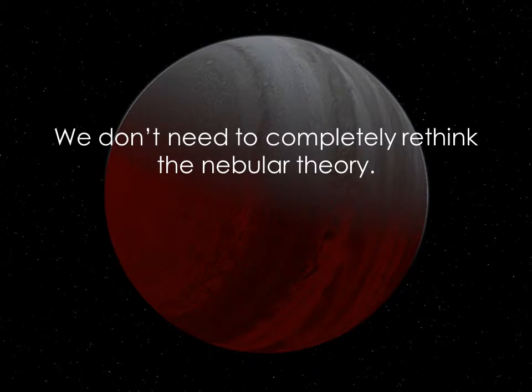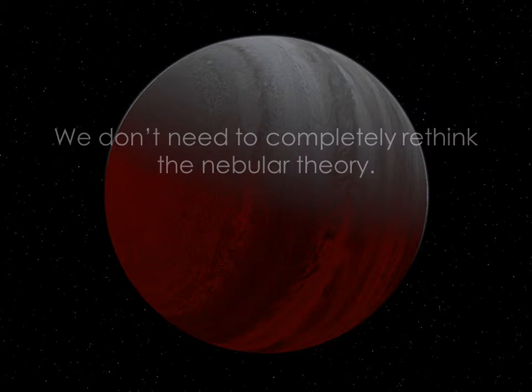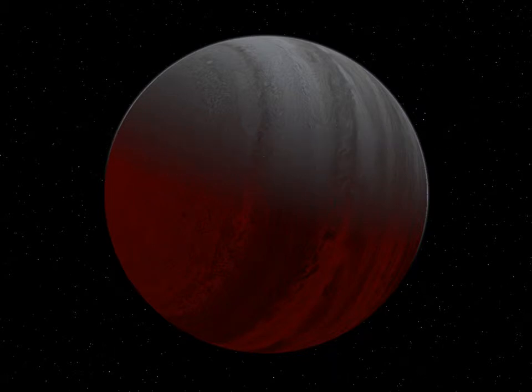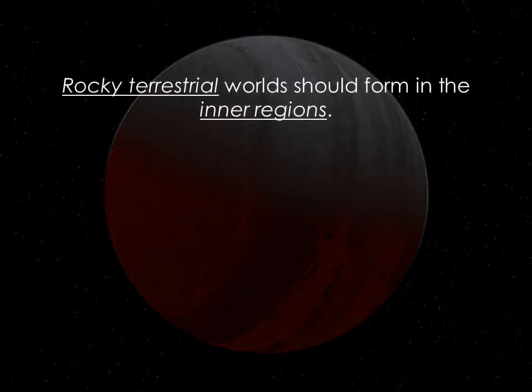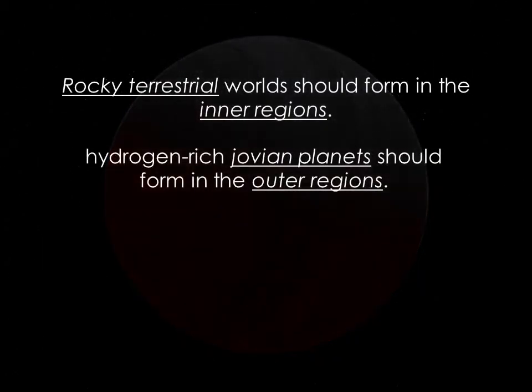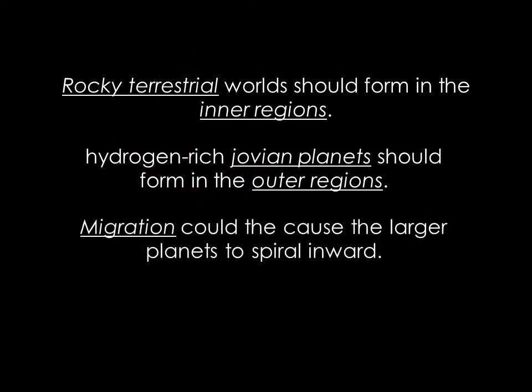Based on our observations of planets around other stars, it's worth asking the question: do we need to modify our theory of solar system formation? If we're right about the role of planetary migration, then the basic tenets of the nebular theory still seem to hold. We expect rocky, terrestrial worlds to form in the inner regions of star systems, and hydrogen-rich Jovian planets to form in the outer regions. Migration could then cause the larger planets to spiral inward.